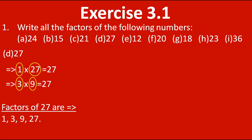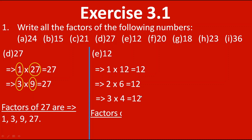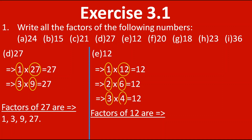Now the next one is 12. Starting from 1: 1 into 12 gives us 12. In the 2's table: 2 sixes are 12. In the 3rd table: 3 fours are 12. Now at the 4th table it is reversing, so we stop here. The factors of 12 are 1, 2, 3, 4, 6 and 12.